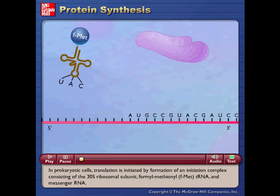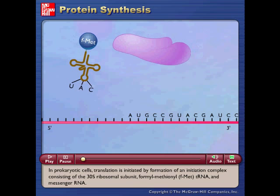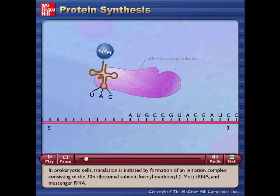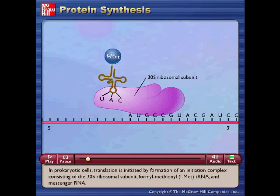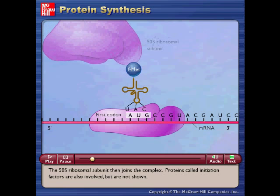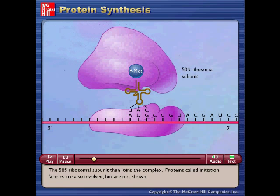In prokaryotic cells, translation is initiated by formation of an initiation complex consisting of the 30S ribosomal subunit, formyl-methionyl tRNA, and messenger RNA. The 50S ribosomal subunit then joins the complex.